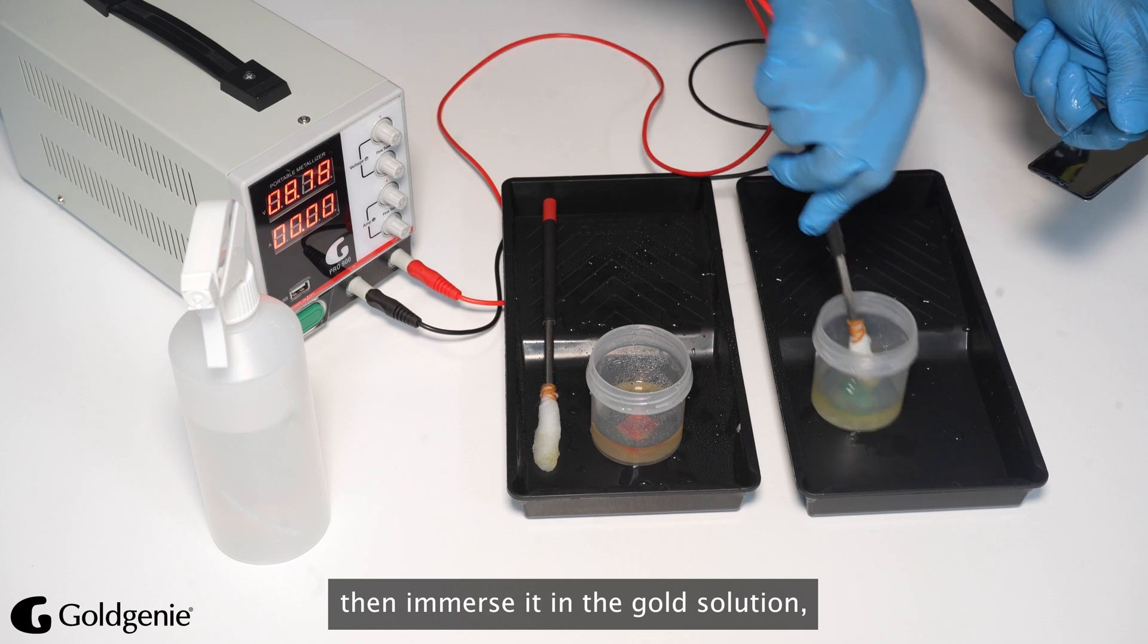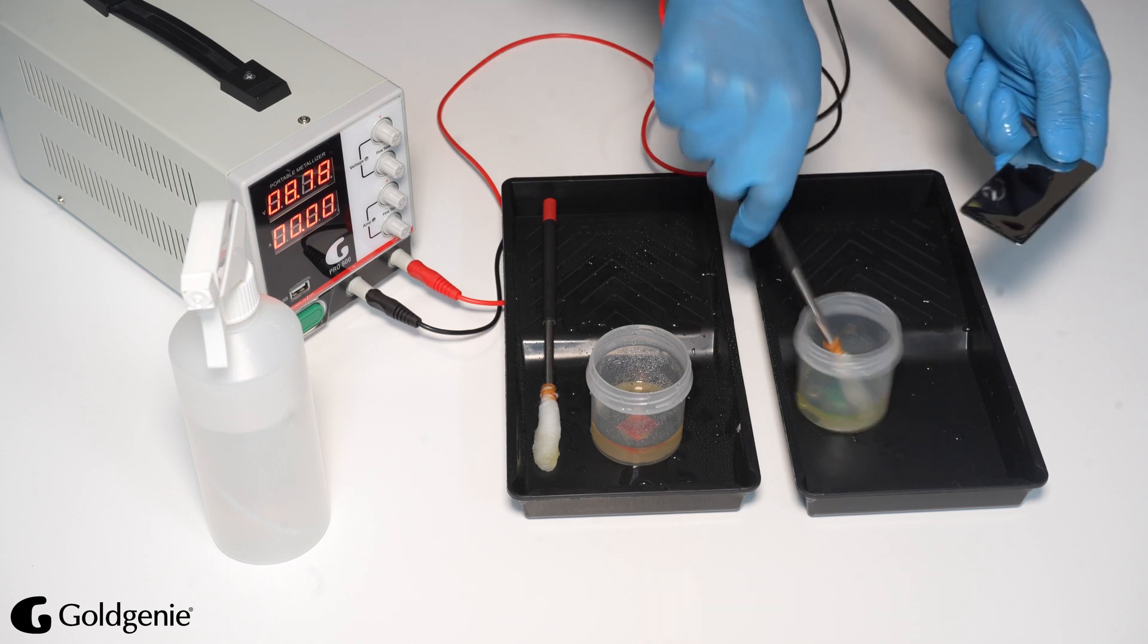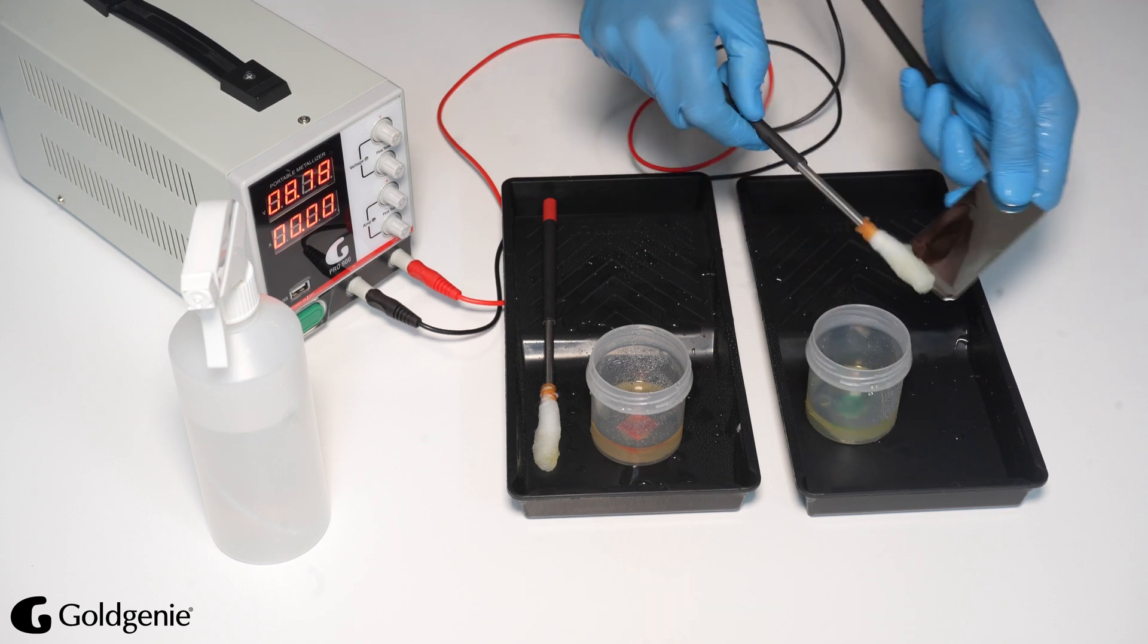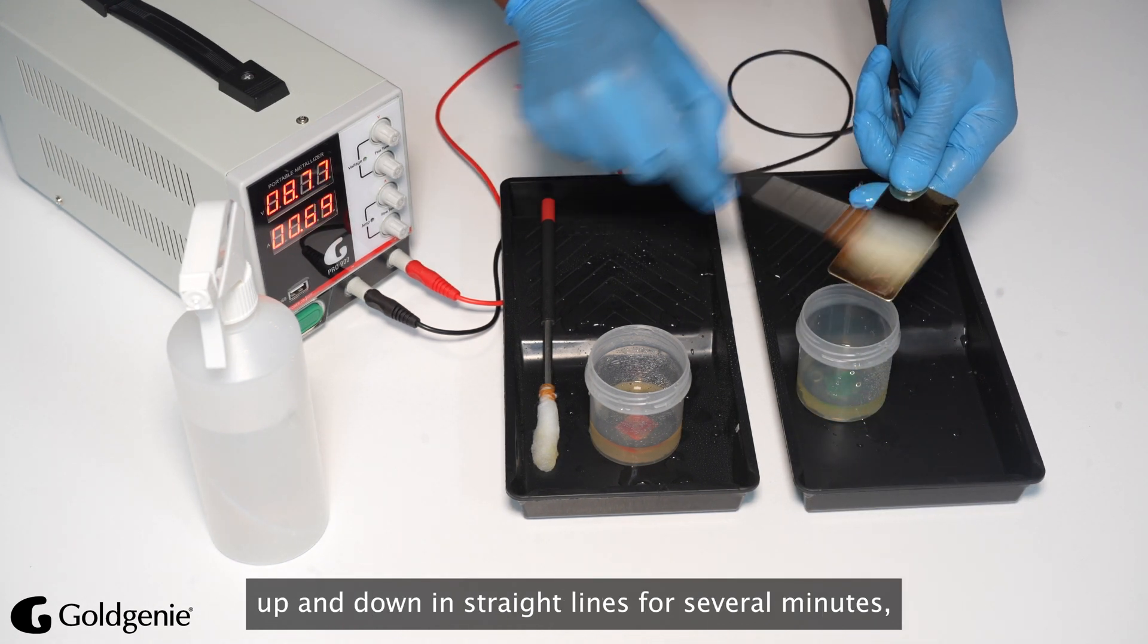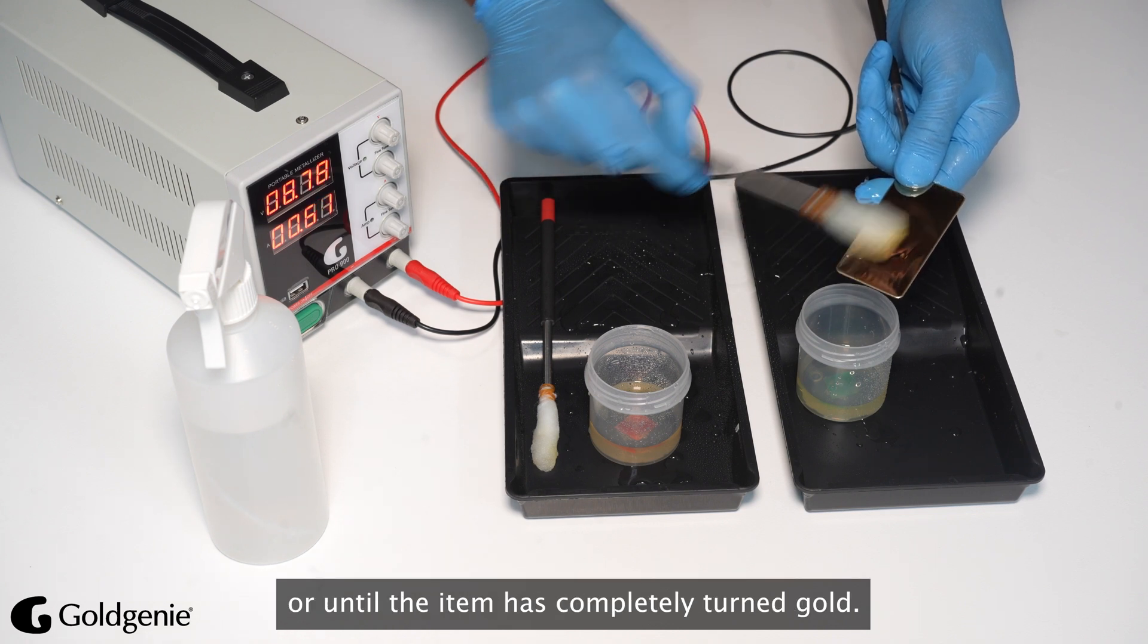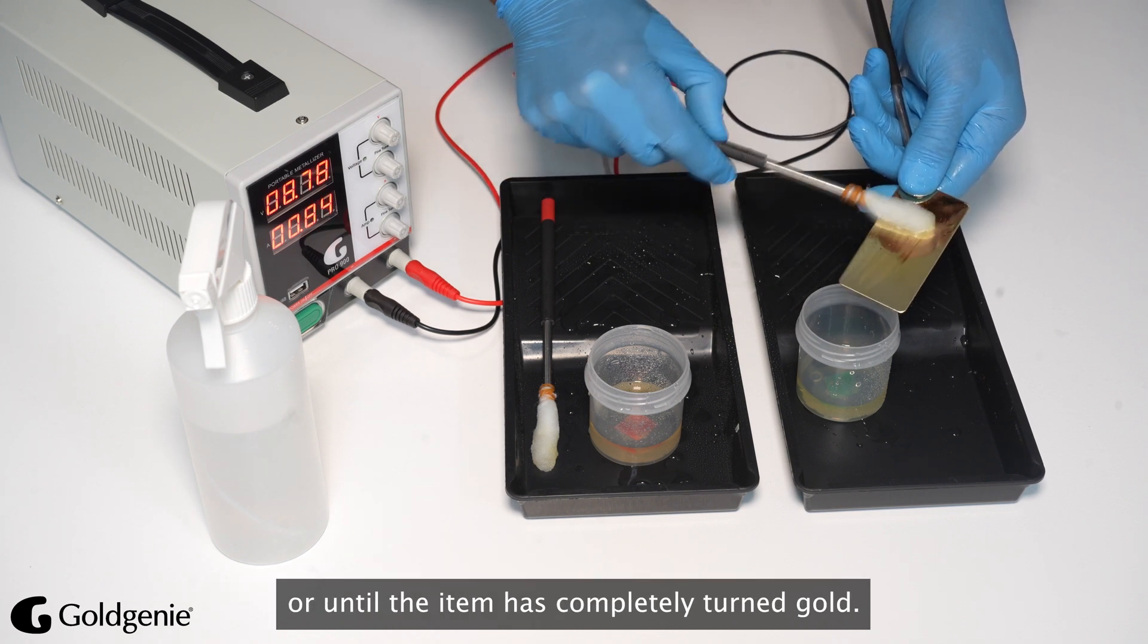Then immerse it in the Gold Solution. Lightly brush gold onto the stainless steel sample up and down in straight lines for several minutes or until the item has completely turned gold.